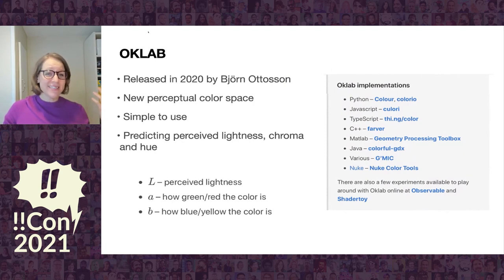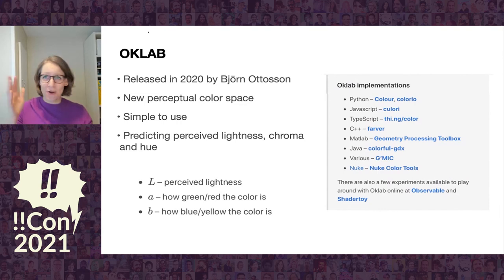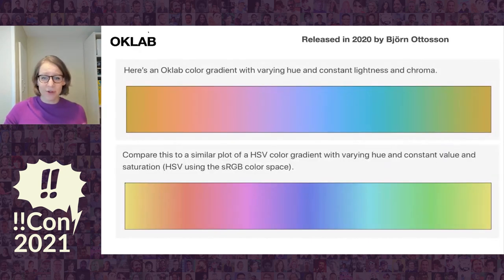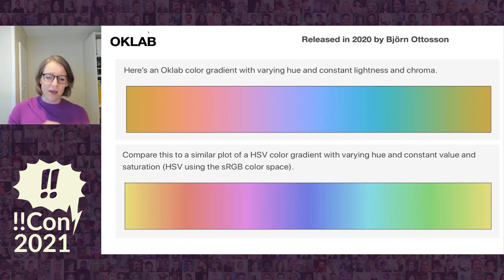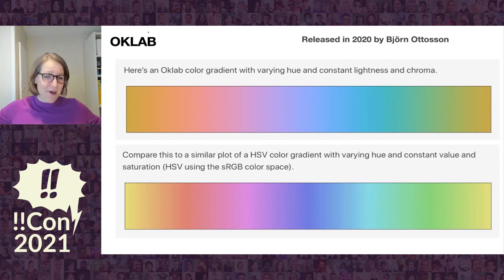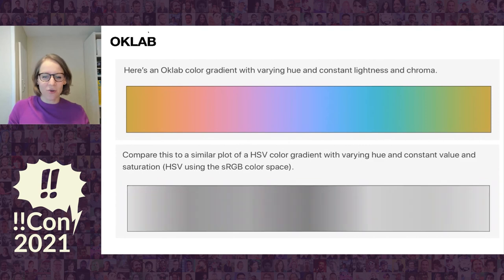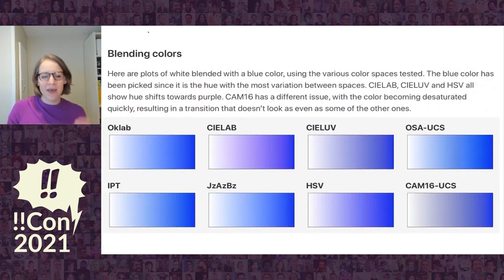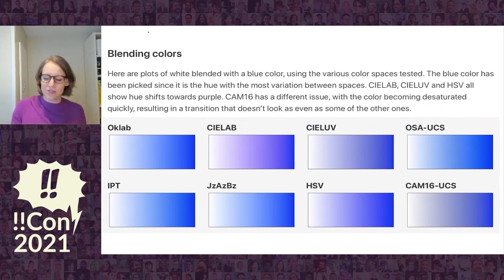One final color space — this is a new one that came out in 2020. If you just Google OKLAB color space, you'll find it. There are a lot of ways to engage with it in different programming languages. It has three variables and works on predicting how to fade and translate color in a way that matches human perception. Here's the rainbow gamut using OKLAB, and on the bottom is using hue-saturation-value, which actually doesn't look like it's holding constant luminosity to the human eye. OKLAB also helps you blend between colors without getting too warm or too cool or blending too fast.